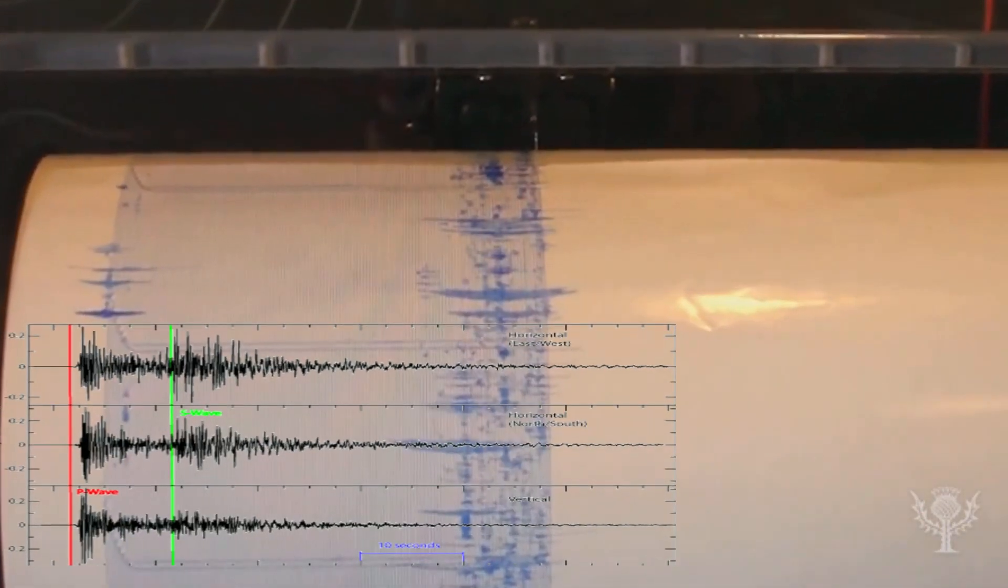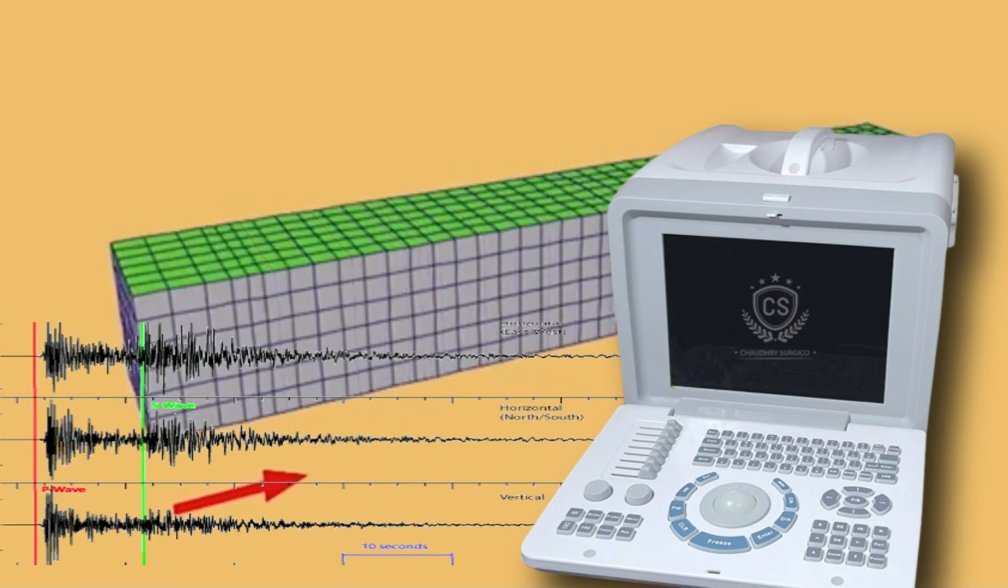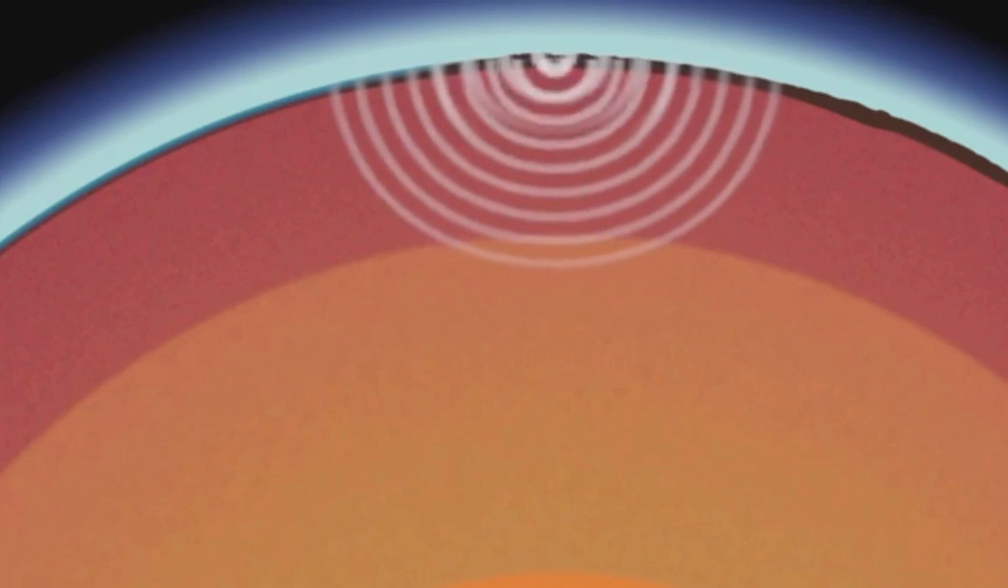Seismic waves, which are created by earthquakes, act like giant ultrasound machines for the planet. As these waves travel through Earth's layers, they provide a detailed map of the planet's internal structure, revealing much more than we thought possible.